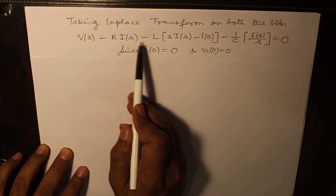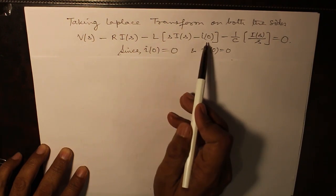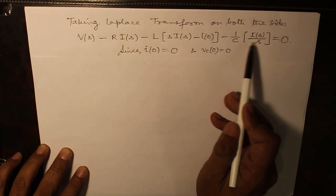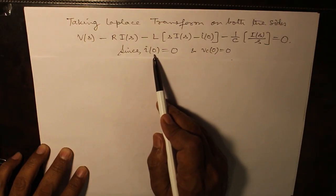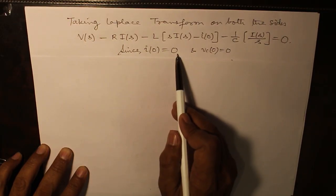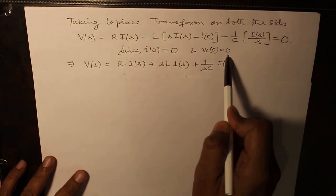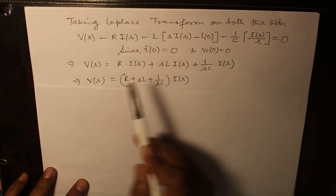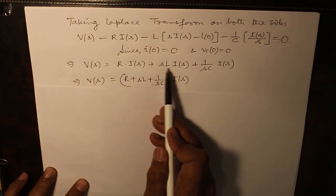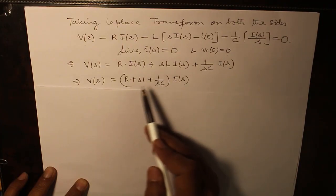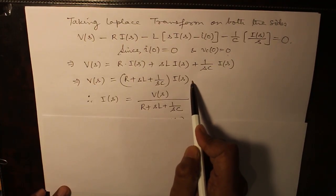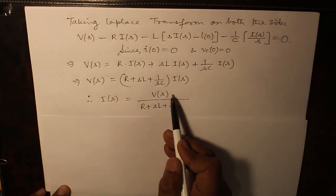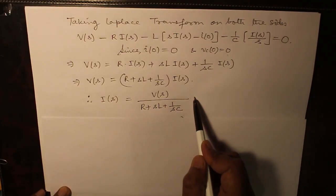V(s) minus R*I(s) minus L of s*I(s) minus I(0) minus 1 over C*I(s) over s equals 0. Since we have initially relaxed system, so I(0) is 0 and VC(0) is 0. Putting these values, we obtain V(s) as R*I(s) plus s*L*I(s) plus 1 over sC, which gives the same expression which we have done earlier in the derivation.